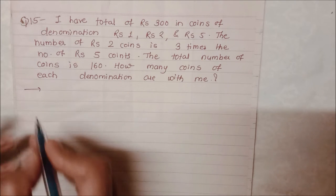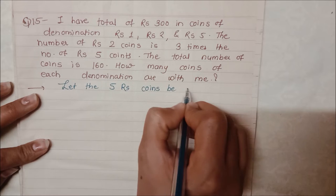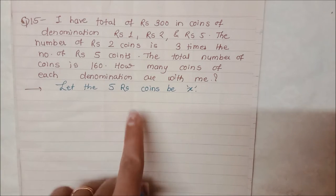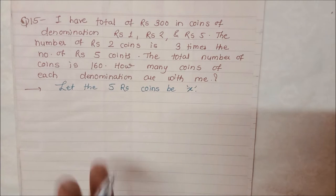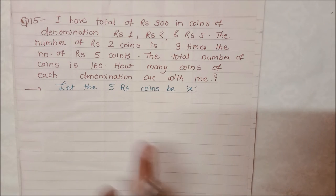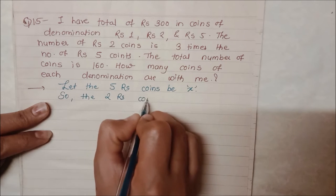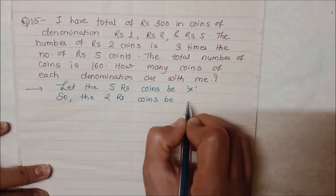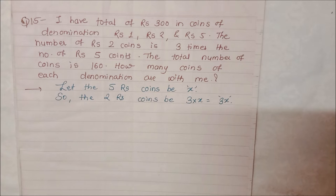First of all, let the number of 5 rupee coins be x. Suppose we have x coins of 5 rupees. Now, for 2 rupee coins — what did they say? Three times. Three times means three into x, that is, 3x will be the number of 2 rupee coins. If 5 rupee coins are ten, then 2 rupee coins will be three times that. So here we have 3x as the number of 2 rupee coins.